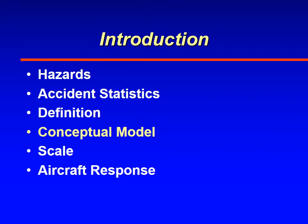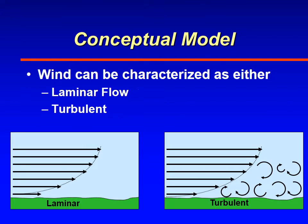Looking at conceptual models, when we think of wind flowing over the ground, eventually it does break down into turbulent flow. If it's flowing nice and smooth, that's what we call laminar flow. But at a point it breaks down, and it's no longer laminar — it's turbulent.